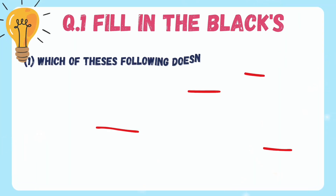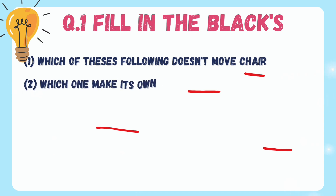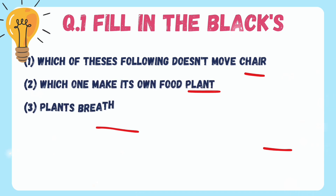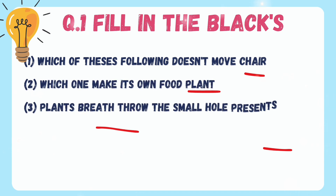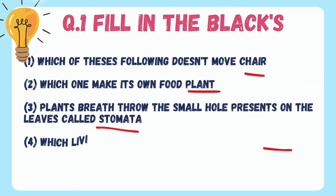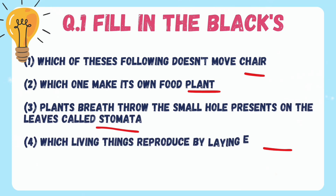Question number one: fill in the blanks. First one — which of these following does not move? Answer: chair. Which one makes its own food? Answer: plants. Plants breathe through the small holes present on the leaves called stomata. Which living thing reproduces by laying eggs? It is known as snake.